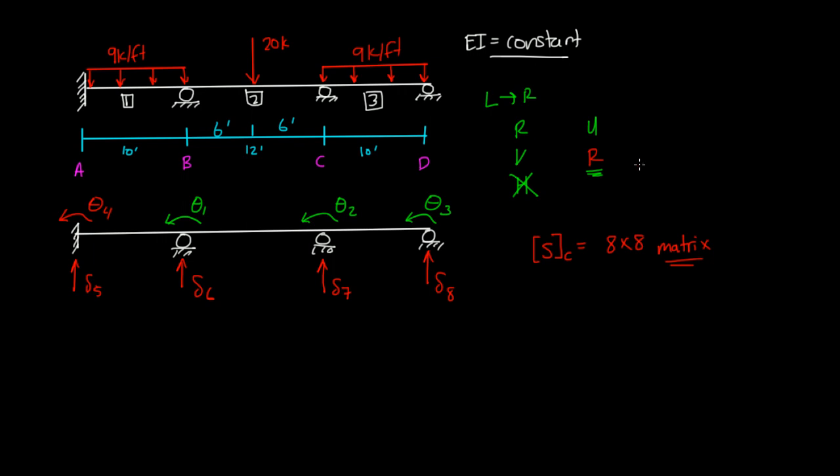The next thing we want to do is determine our stiffness matrix. And I'm actually going to erase this because we don't need it. And I'm going to write out the stiffness matrix. Now, since we're only analyzing rotations and verticals, our stiffness matrix is going to be 4 by 4.